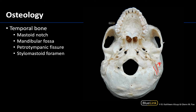Moving anteriorly and very near that zygomatic process of the temporal bone, there is a notable fossa — a very smooth area getting a little into that styloid process right there. This is going to be your mandibular fossa. The mandibular fossa is going to be the temporal portion of the temporomandibular joint.